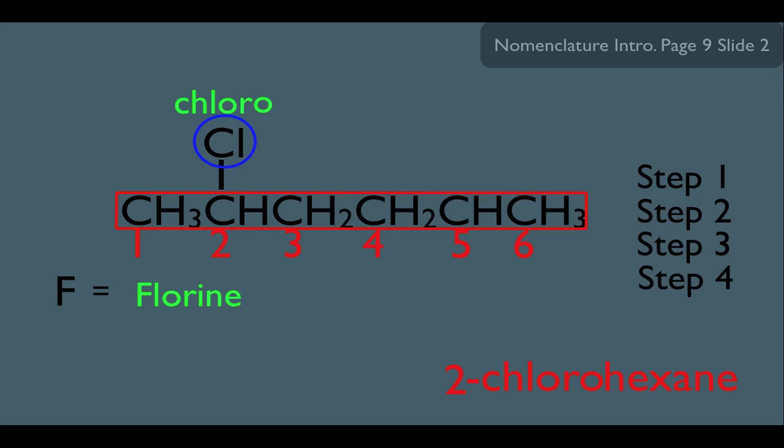For instance, F-fluorine becomes fluoro, and bromine, Br, becomes bromo, and iodine becomes iodo.